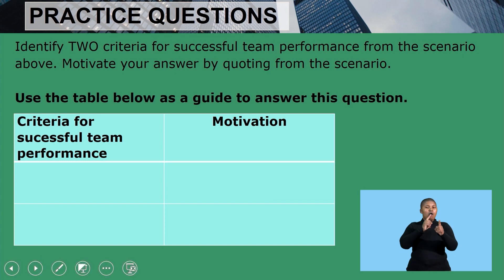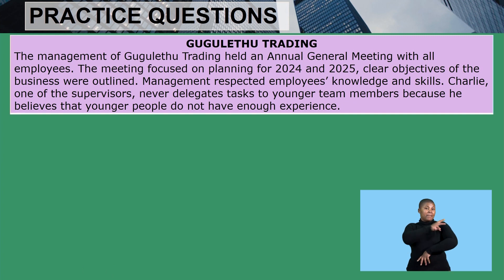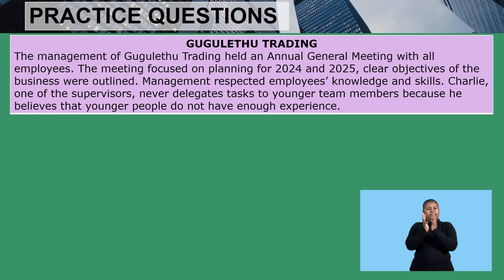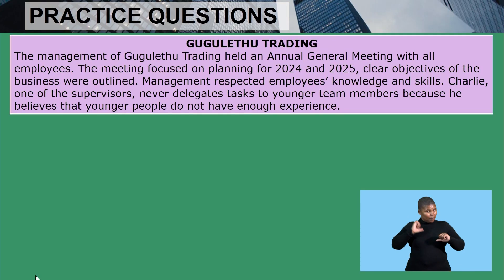Now let us go back to our scenario. The management of Guguletu Trading held an annual general meeting with all employees — this is just a statement informing us what Guguletu Trading had done, which is holding an annual general meeting with employees. We are looking for criteria for successful team performance. The meeting focused on planning for 2024 and 2025.